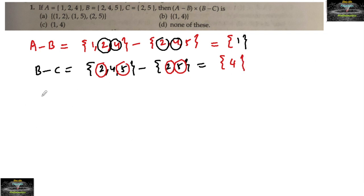Then A-B cross B-C is equal to {1} cross {4}. We will get only one ordered pair, which is (1, 4). So the set with element (1, 4) as an ordered pair is the answer. Option B is the right answer.